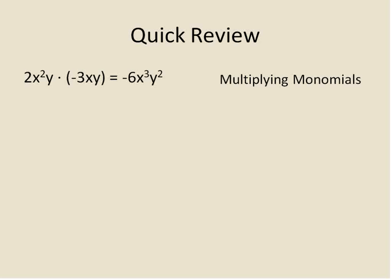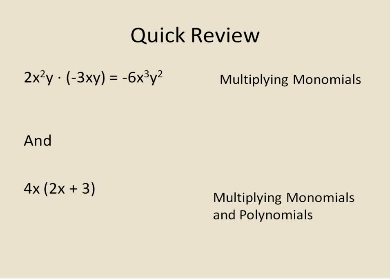You multiply the numbers — 2 times negative 3, which gives you negative 6 — and then you multiply the x's times the x's and the y's times the y's. When you're multiplying a variable like that, you just add the exponents. So x squared times x gives you x cubed, and y times y gives y squared.